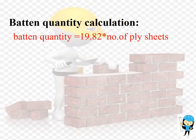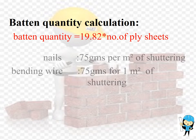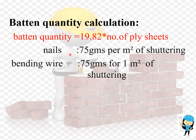Next we are going to see the amount of batten required. Batten is a long narrow piece of wood attached to another piece of wood, used as a connecting tool. The formula to calculate the batten quantity is 19.82 × number of plywood sheets. For nails and binding wire: for 1 m² of shuttering work, the total amount of nails required is 75 grams, and the binding wire required is also 75 grams per m² of shuttering.